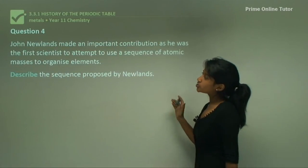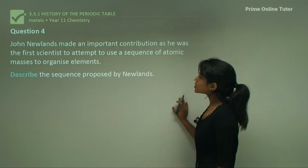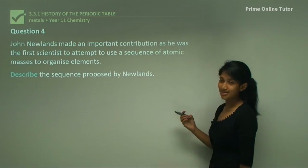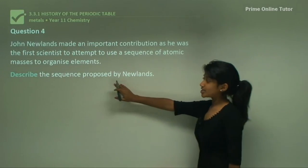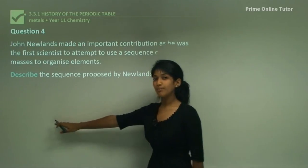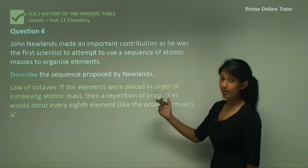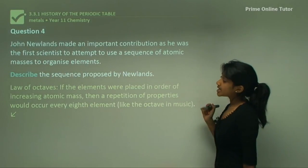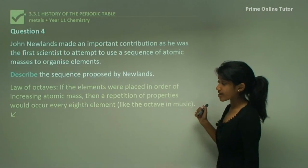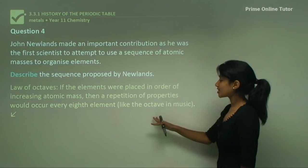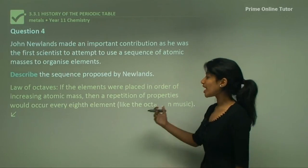Question 4: John Newlands made an important contribution as the first scientist to attempt to use a sequence of atomic masses to organize elements. Describe the sequence proposed by Newlands. His law of octaves states: if the elements were placed in order of increasing atomic mass, then a repetition of properties would occur every eighth element, like the octave in music. In other words, every eighth element would have similar properties.